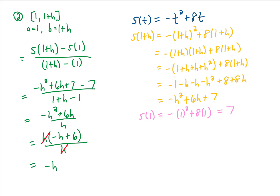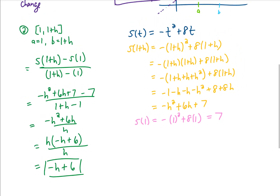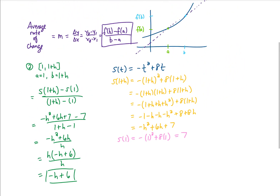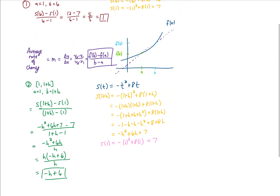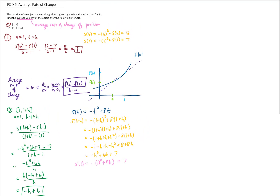Our final answer is negative h plus 6. This is the average velocity of the given function on the given interval. Let's zoom out so you can see everything we did in this video. I hope that helps you out, and I'll see you in the next problem of the day.